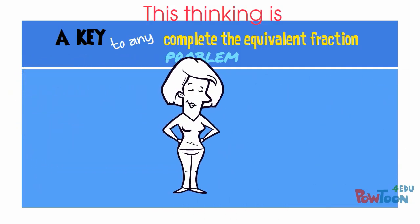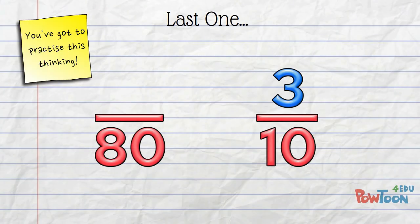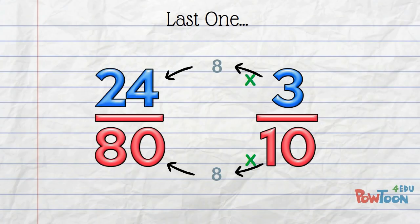Last one, then it's your turn. The first fraction is incomplete. Again, we have 10 and 80 as our denominators. No problem! If I work right to left, I'm going smaller to larger. 10 times something is 80. 10 times 8 is 80. Now we do the same to the top. So working right to left again, 3 times 8 gives me 24 as that missing numerator.